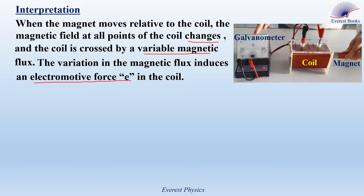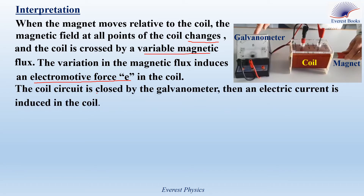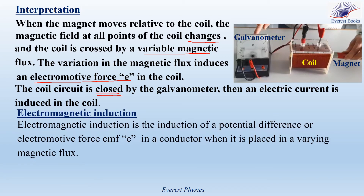What about the current? Since the coil circuit is closed by the galvanometer, an electric current is induced in the coil. Pay attention to this remark: when an electromotive force is induced in the circuit, a current is induced only if the circuit is closed. This phenomenon — the production of electricity in a circuit due to the variation of the magnetic flux — is called electromagnetic induction. Electromagnetic induction is the induction of a potential difference or electromotive force E in a conductor when it is placed in a varying magnetic flux.